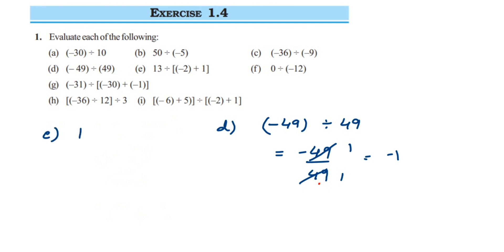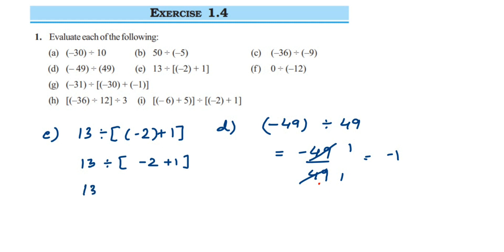Problem e: 13 divided by (minus 2 plus 1). They've given brackets, so we solve the bracket first. Inside: minus 2 plus 1 — we're adding integers with different signs, so we subtract. 2 minus 1 is 1, and since 2 is greater and its sign is minus, we get minus 1. So it becomes 13 divided by minus 1, written in fractional form as minus 13.